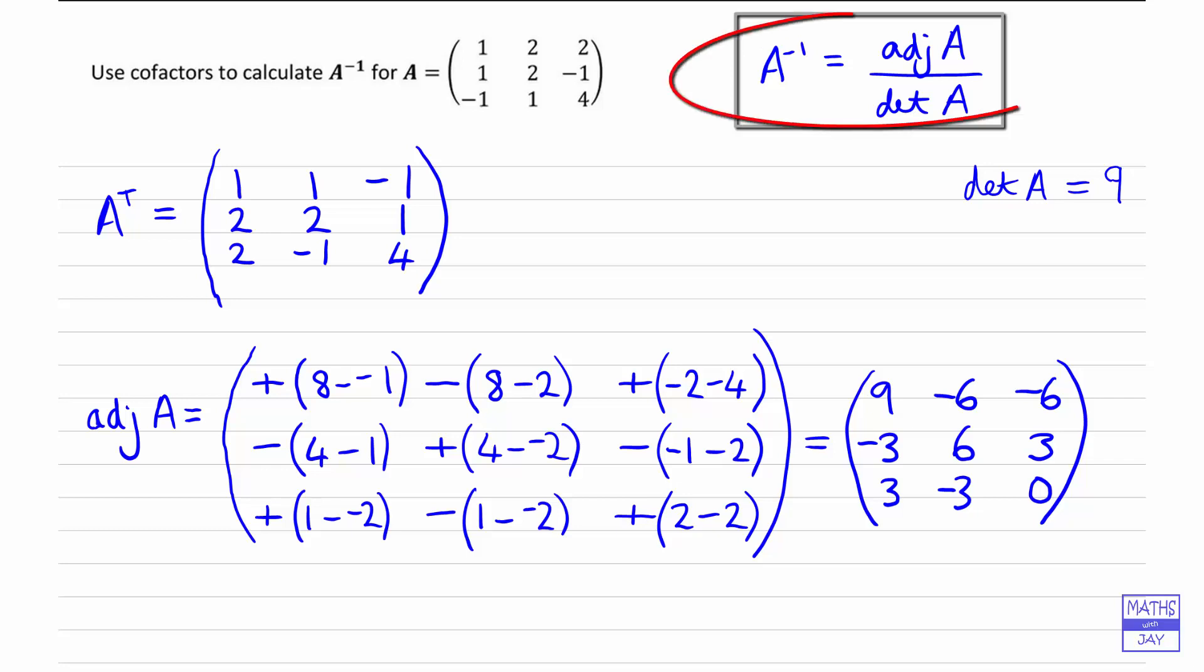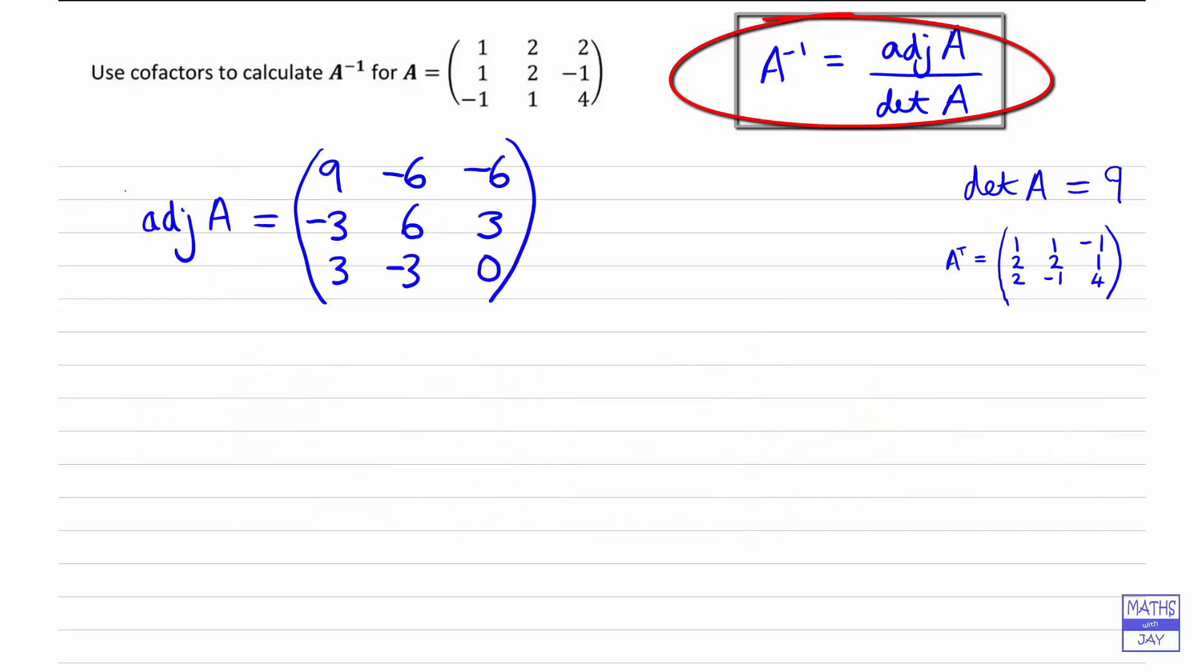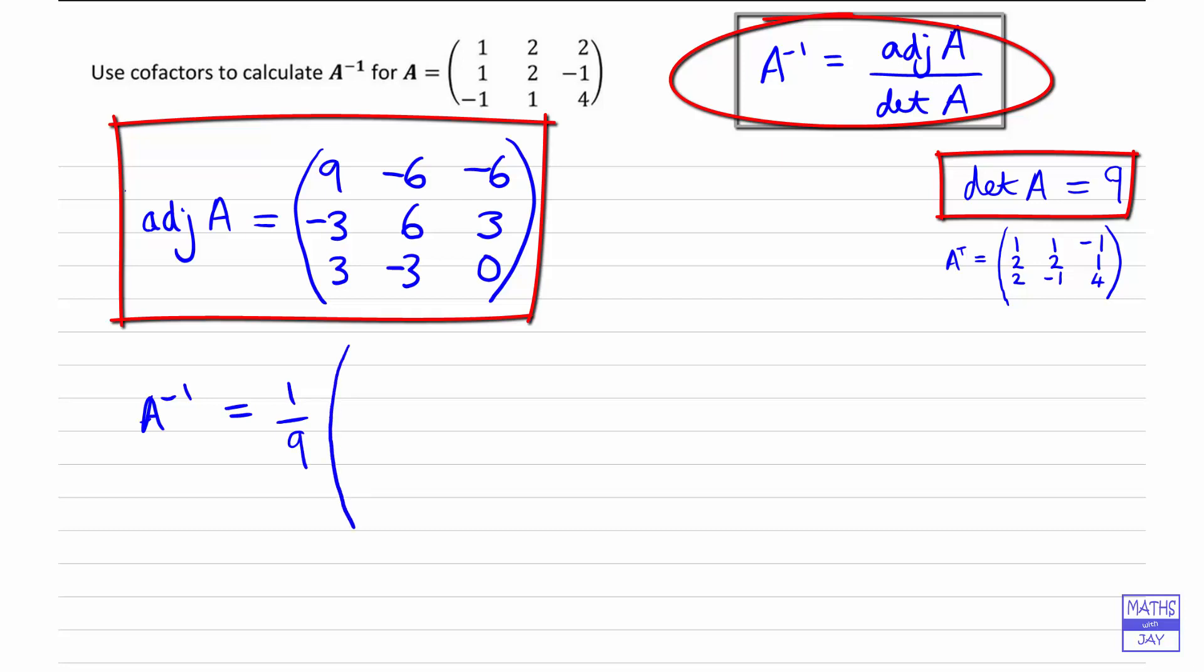And now we're ready to use the formula. So let's just give ourselves a bit more space. So we are now ready to substitute into our formula for the inverse of A. So all we need to do is to find the ninth of the matrix we've just written down.